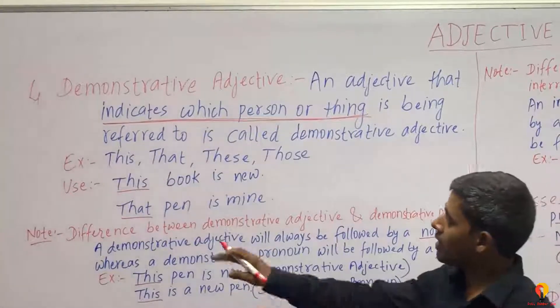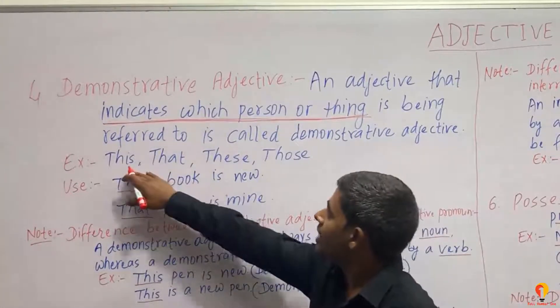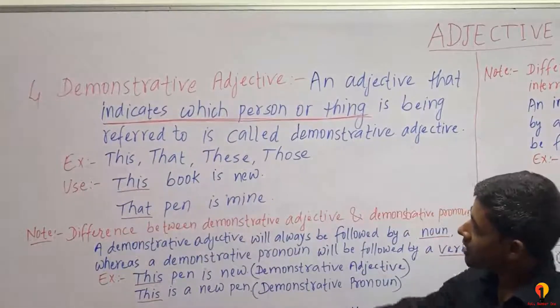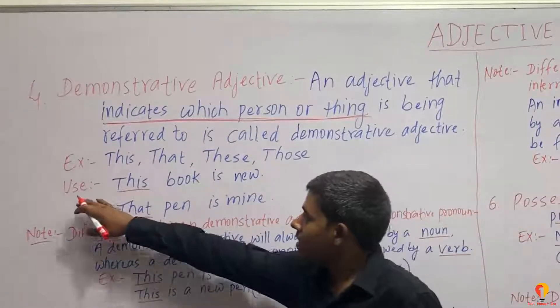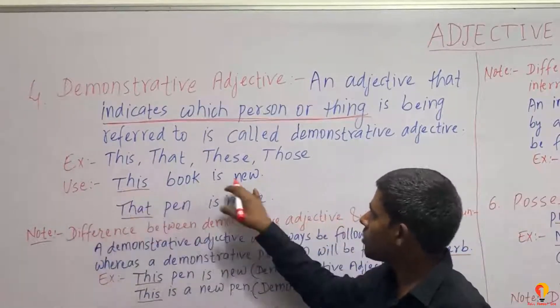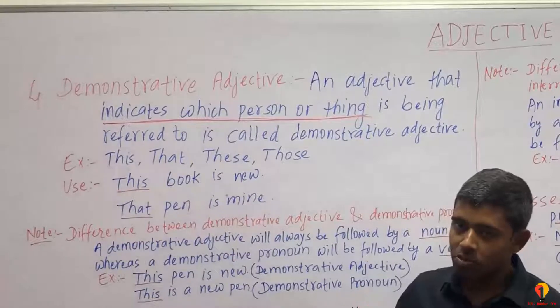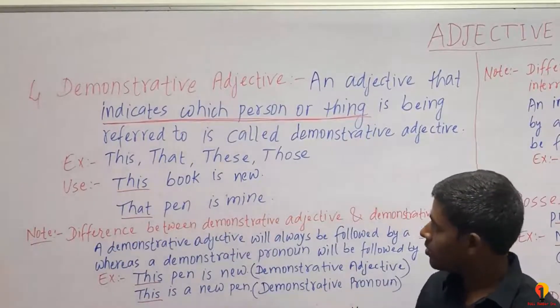Examples are: this, that, these, those. You can listen — 'this book is new.' This book is new. Here, 'this' indicates that the book is new.